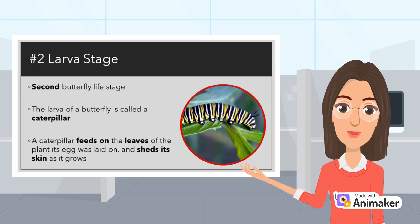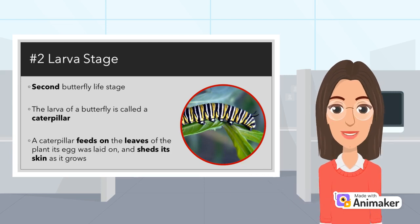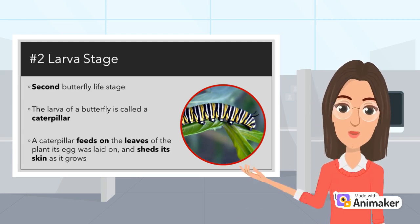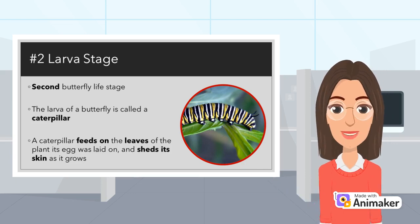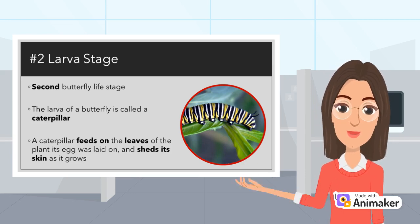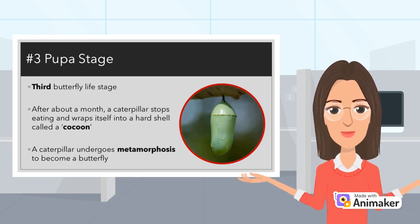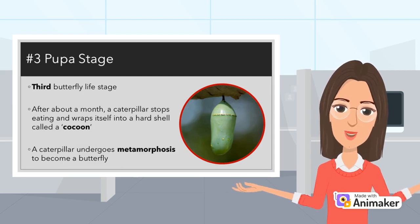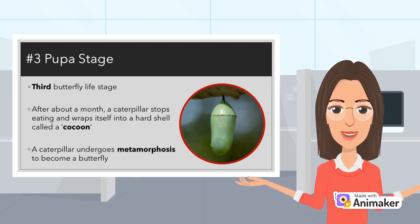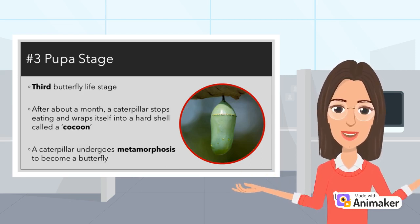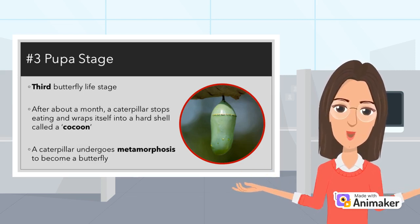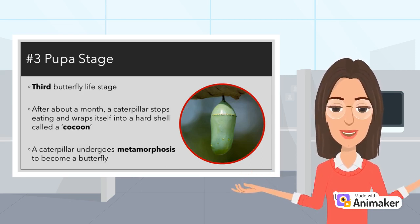The larva of a butterfly is commonly known as a caterpillar. A caterpillar feeds on the leaves of the plant its egg was laid on, and sheds its skin as it grows. After a month or less, the caterpillar stops eating and wraps itself into a hard shell called a cocoon.